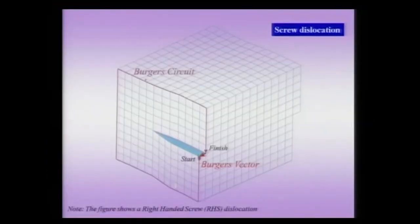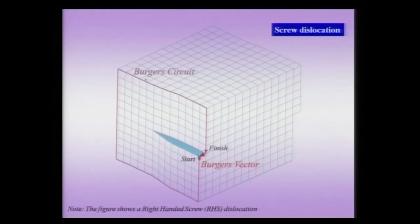Let us next consider the more difficult-to-visualize form of a dislocation: the screw dislocation. These are called screw dislocations as can be seen from the figure. This is my perfect crystal in which a screw dislocation has been introduced — it is a crystal with a screw dislocation.